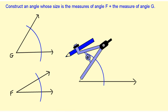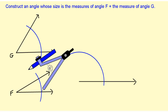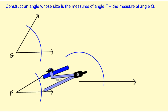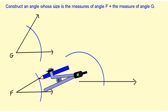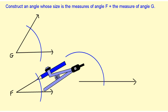Now I need to copy angle F, so I'm going to take my compass, put the point where it intersects the lower ray. I need to adjust the width of my compass so I measure that opening, and I'm going to mark it off just a little bit.